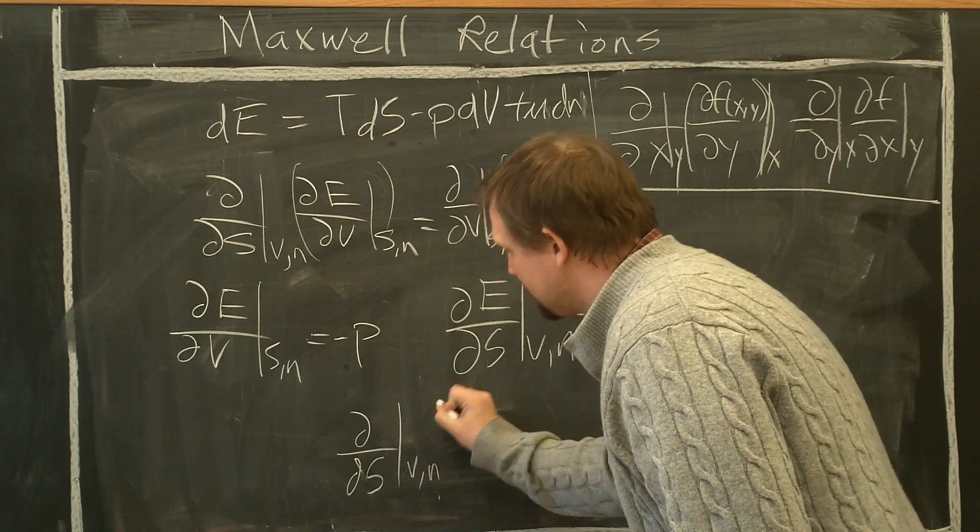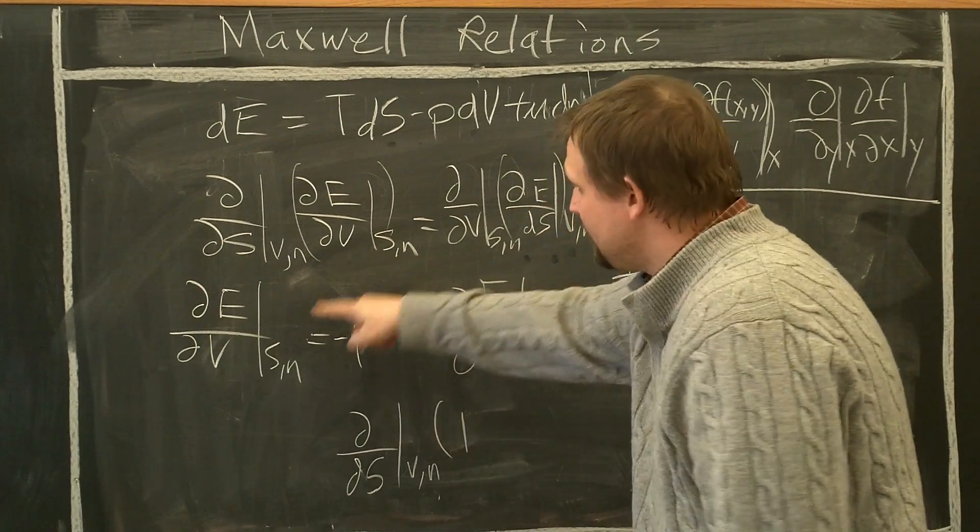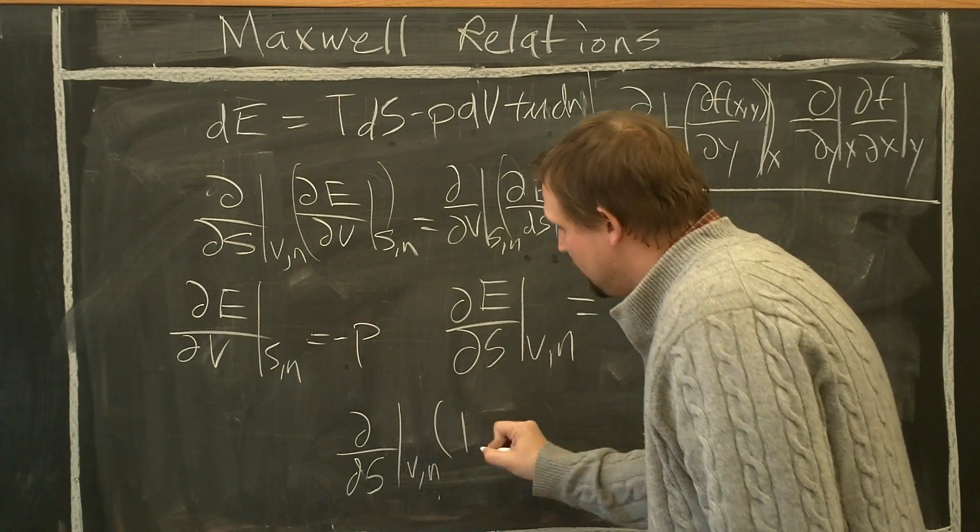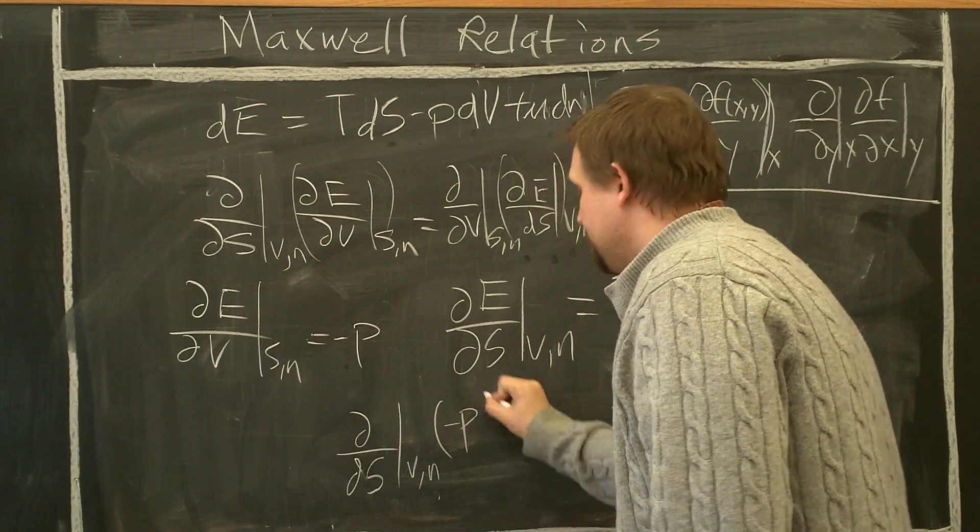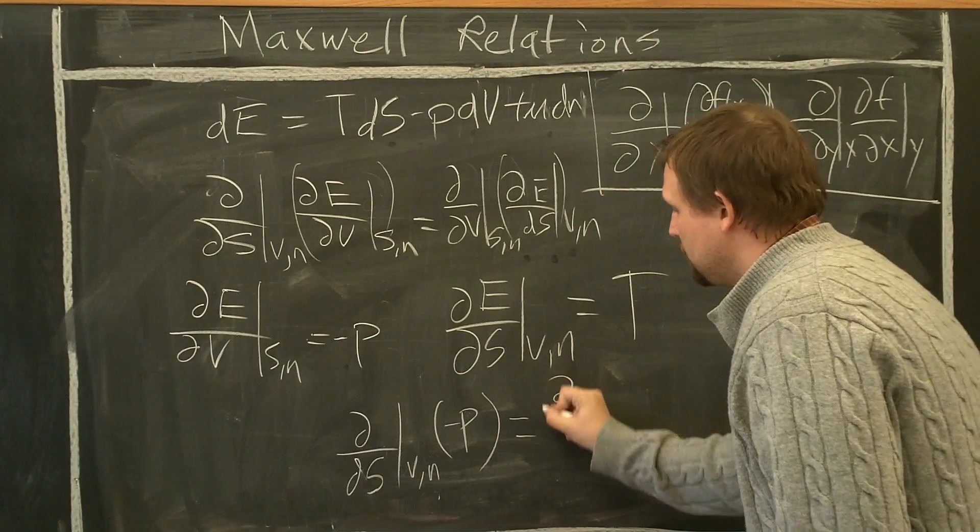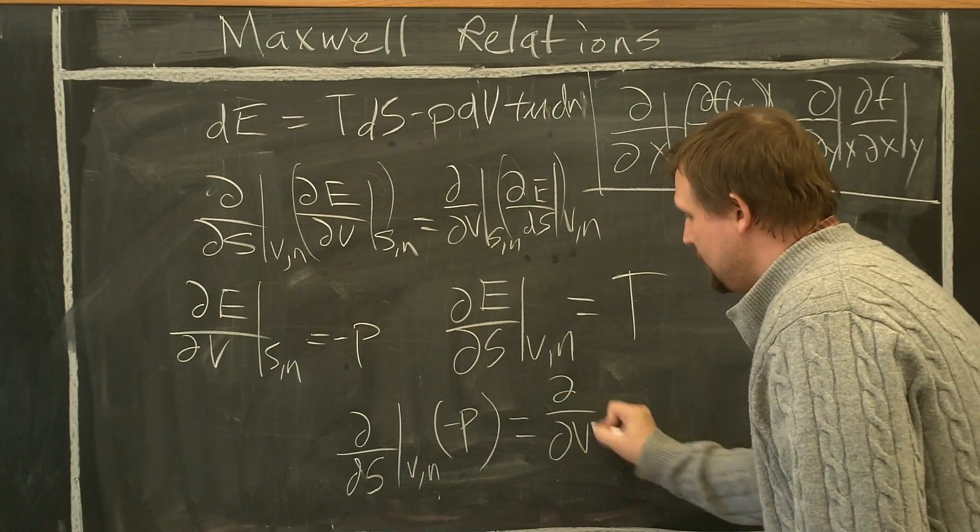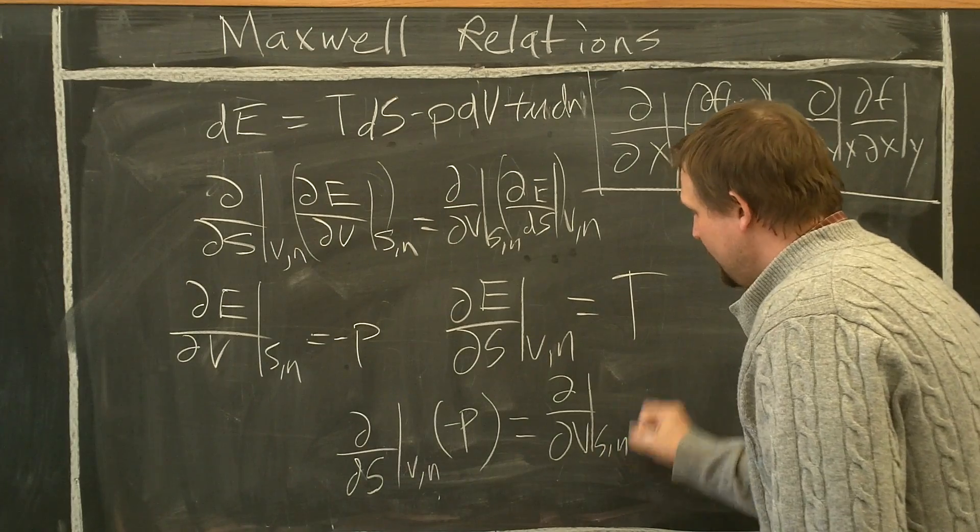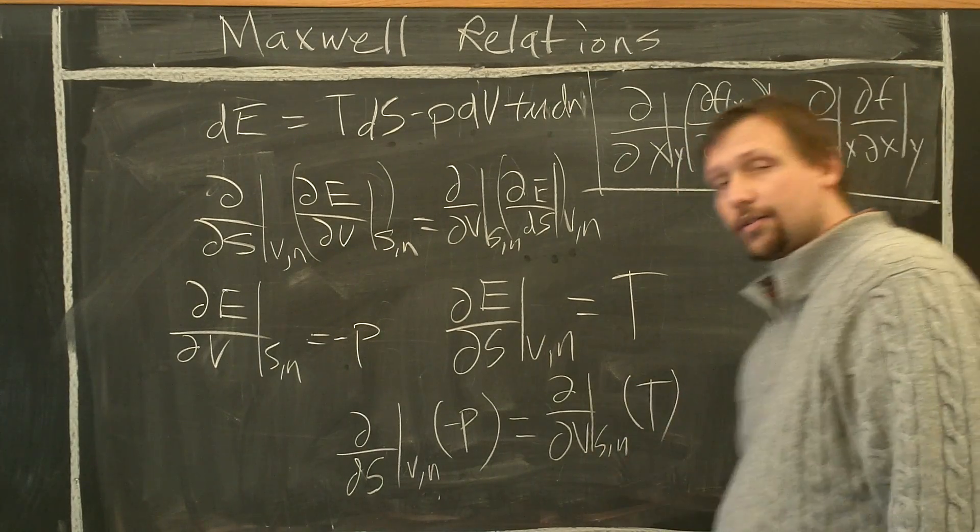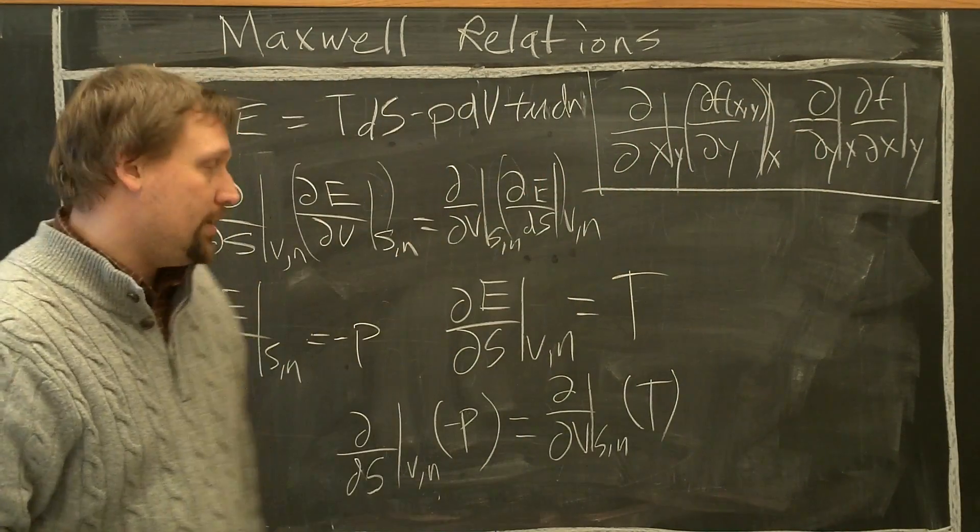∂/∂S, V comma N fixed of dE/dV at constant S is going to be equal to minus P equals ∂/∂V constant S comma N of T. That is one Maxwell's relationship.